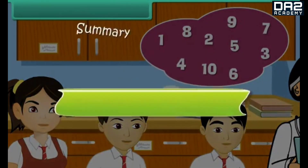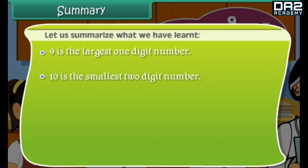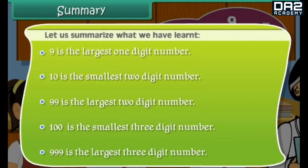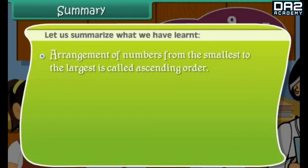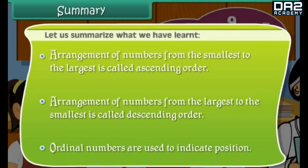Summary. Let us summarize what we have learned. Nine is the largest one-digit number. Ten is the smallest two-digit number. Ninety-nine is the largest two-digit number. Hundred is the smallest three-digit number. Nine-hundred and ninety-nine is the largest three-digit number. Arrangement from smallest to largest is ascending order. Arrangement from largest to smallest is descending order. Ordinal numbers are used to indicate position.